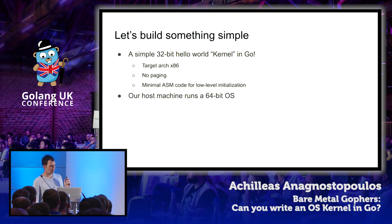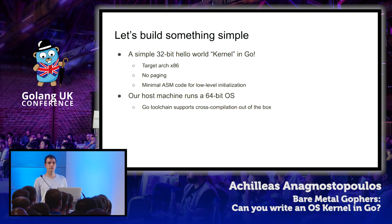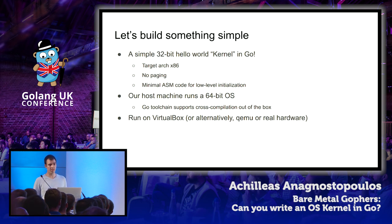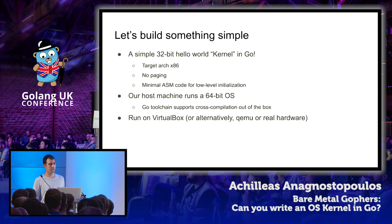Regarding our host machine: we're running a 64-bit OS, so we have to rely on the cross-compilation capabilities offered by the Go toolchain. Once we have our kernel image ready, we'll build a bootable ISO out of it and run it using VirtualBox. As an alternative, we can also use QEMU, which is very helpful if you want to debug something, or just burn it on a CD-ROM and boot it on real hardware.